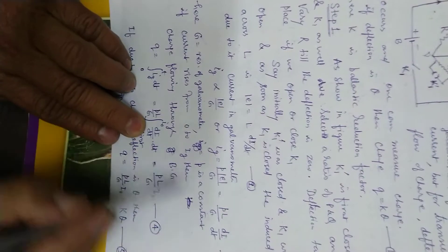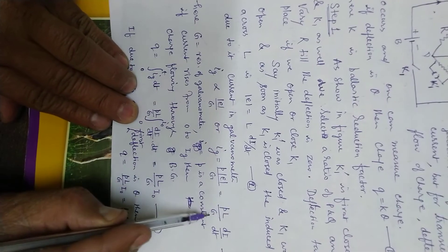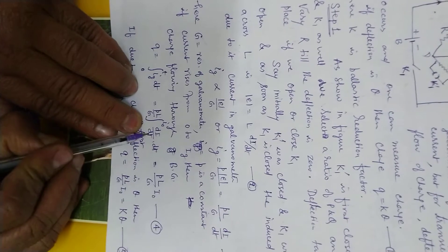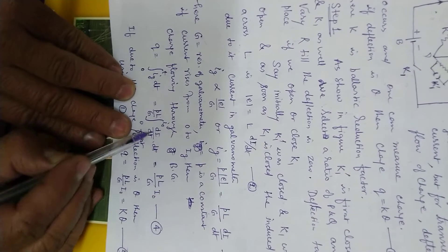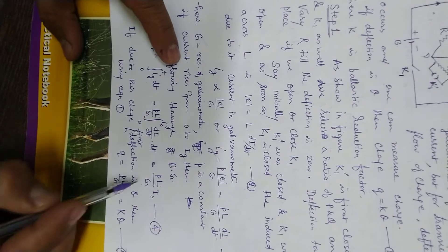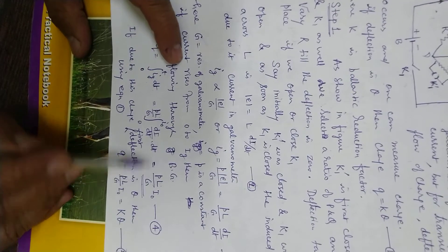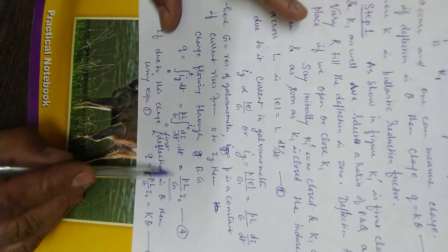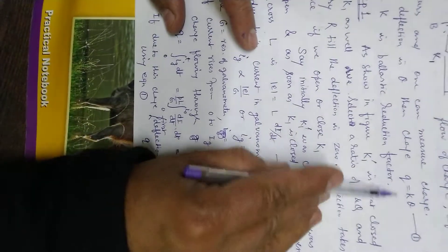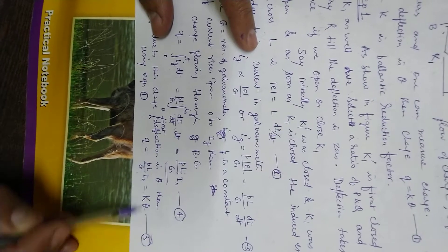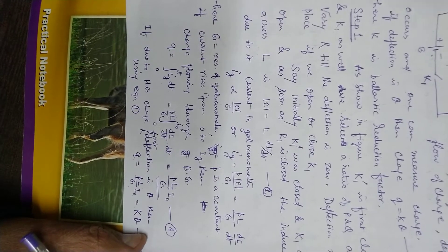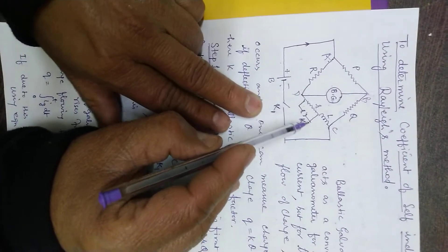The charge flowing is simply obtained by q equals integration of the current with respect to time, and the current goes from 0 to i0. I have written this value of ig as p L upon g, that is outside the integration. Current has raised from 0 to i0, di by dt is there multiplied by dt, dt will cancel, and after integrating I will get p L i0 by g. This is equation number four. Now if due to this charge the deflection in the ballistic galvanometer was theta, then using q equals k theta, this equals p L upon g i0. This is equation number five.